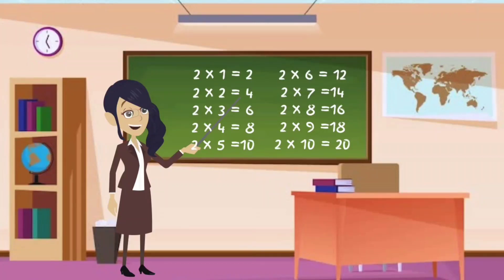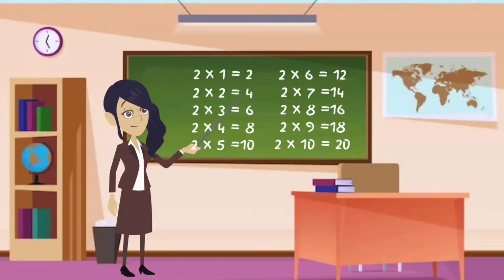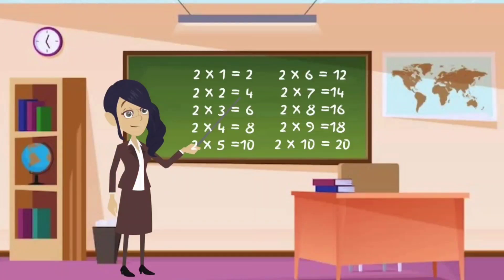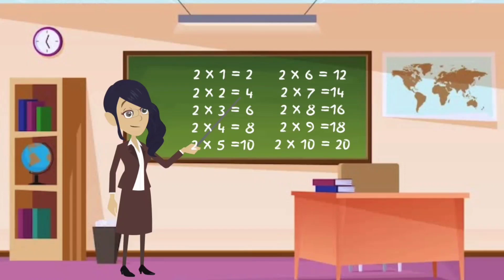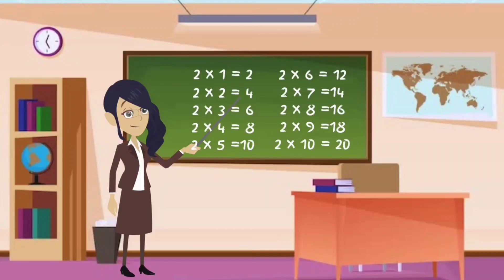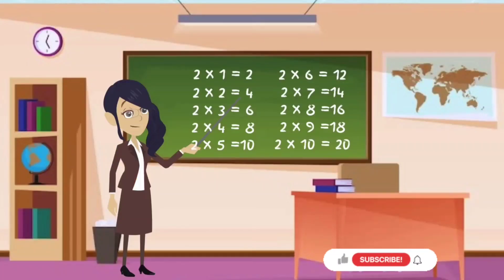Let's do this again together. 2 ones are 2. 2 twos are 4. 2 threes are 6. 2 fours are 8. 2 fives are 10. 2 sixes are 12. 2 sevens are 14. 2 eights are 16. 2 nines are 18. 2 tens are 20.